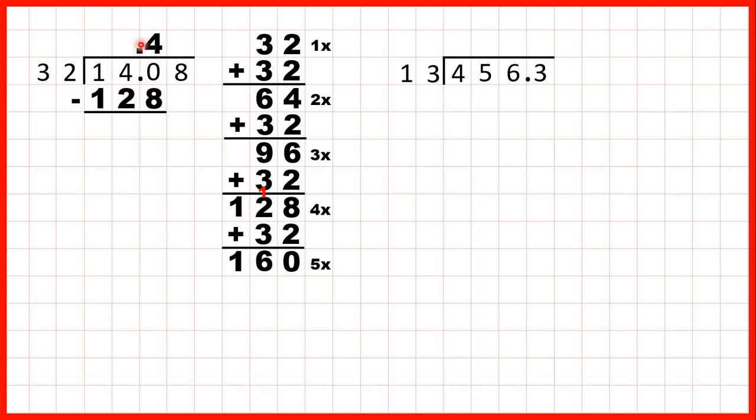Now here, because we have a decimal point, it's really important that we write this 4 in the correct place. Remember, we always write the digits above the last digit that we divided. And because we divided 140 by 32, the 4 needs to be written above this 0.